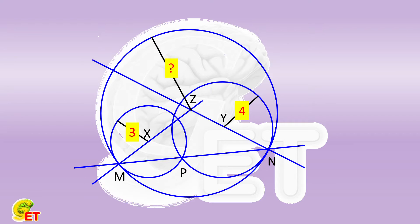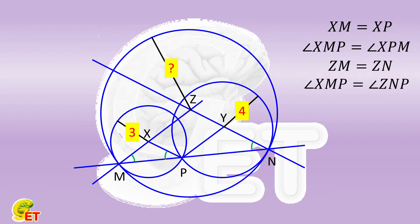We then connect XP and YP respectively. In the small circle X, XM and XP are both radii, so angle XMP is equal to angle XPM. In the big circle Z, ZM and ZN are both radii, so angle XMP is equal to angle ZNP. The angle XPM is then equal to ZNP, so XP is therefore parallel to ZN.